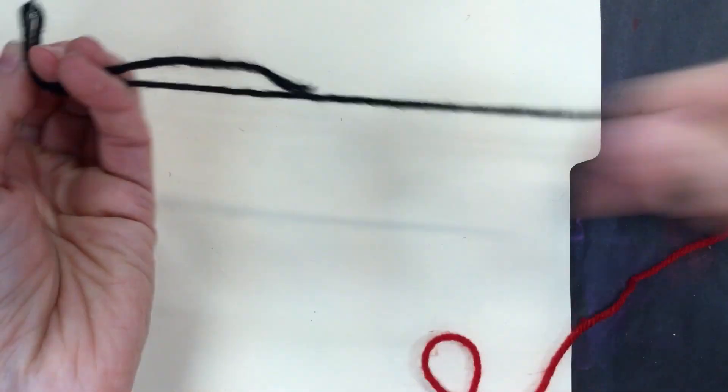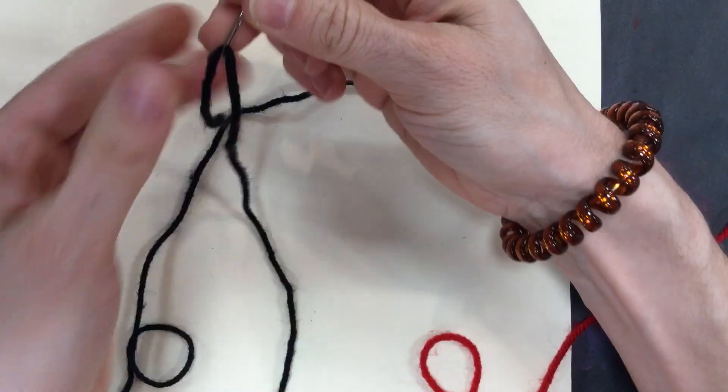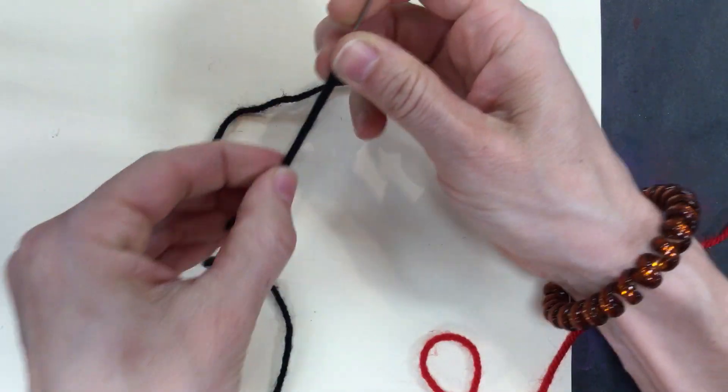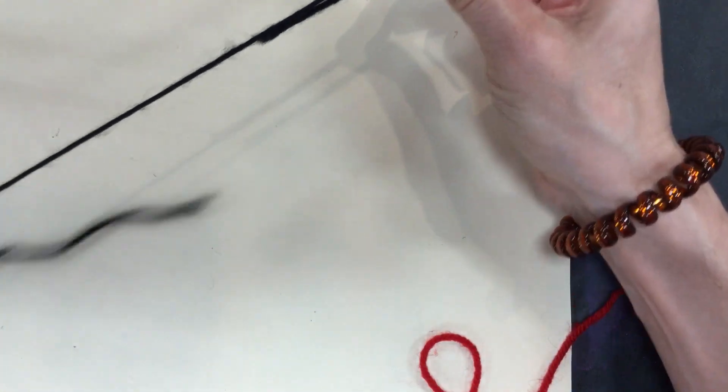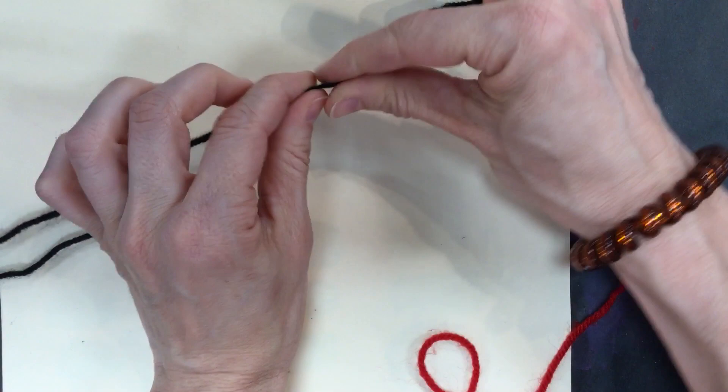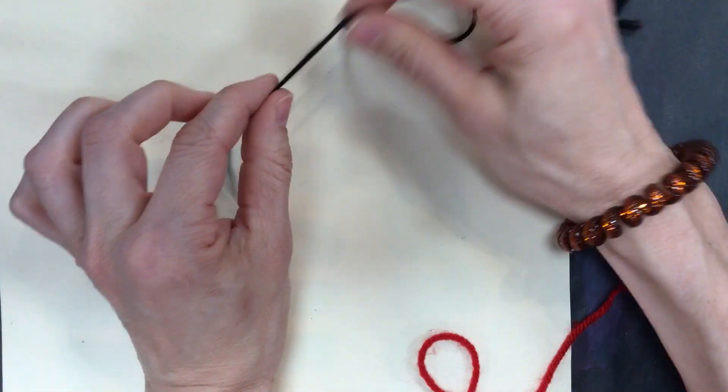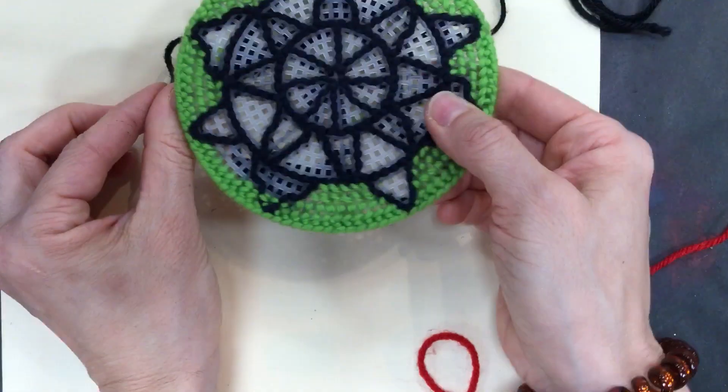Okay, number two. As you're working, you're going to come to a situation where you have to start with a new piece of thread because the one piece of thread that you have is probably going to be like 16 inches long and you'll need more than that to complete your whole thing.